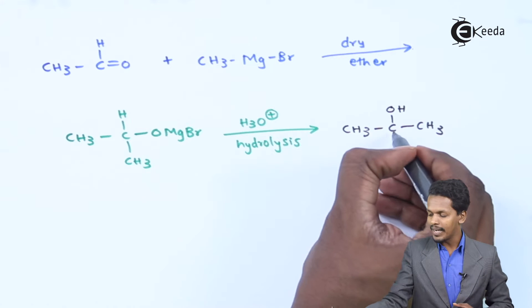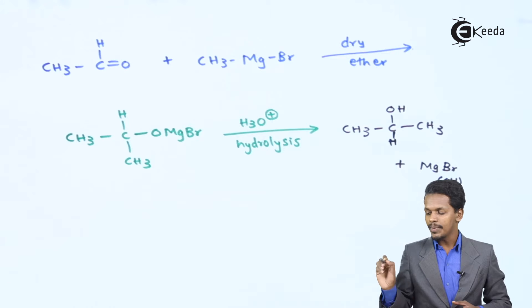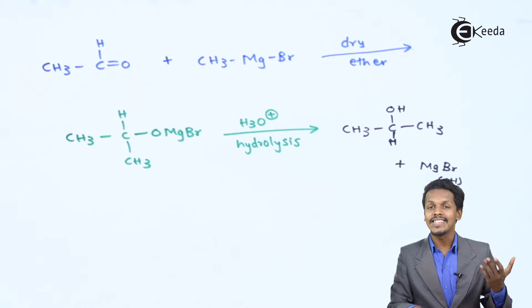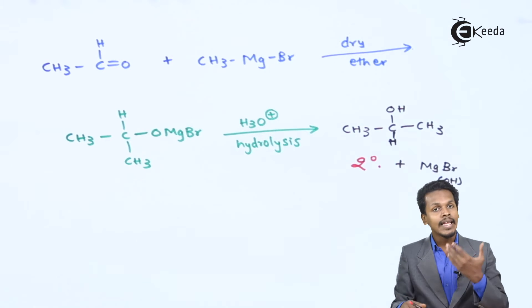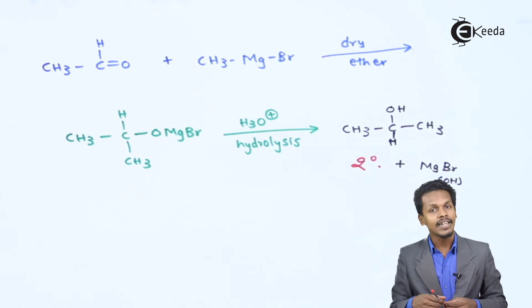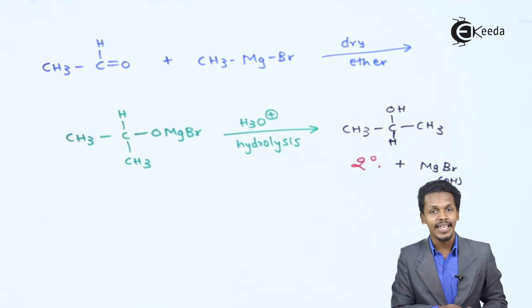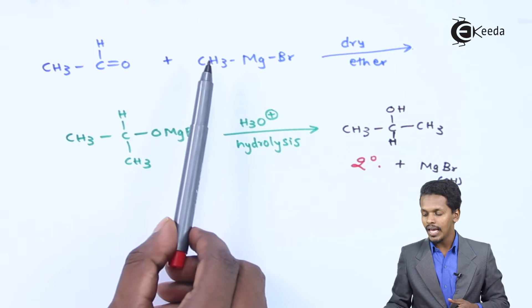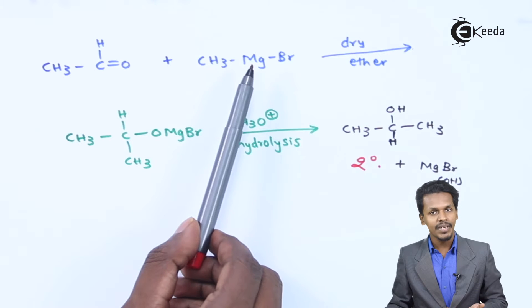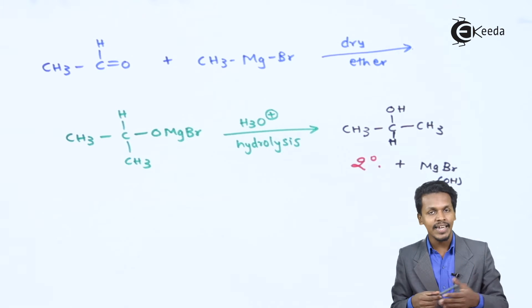After hydrolysis, the product we obtain is CH3-CH(CH3)-OH, with the byproduct being MgBr·OH. This is a secondary alcohol obtained from acetaldehyde using the Grignard reagent. If we had used formaldehyde instead, we would have obtained a primary alcohol.